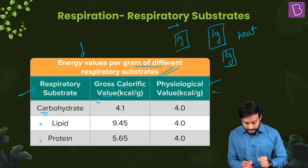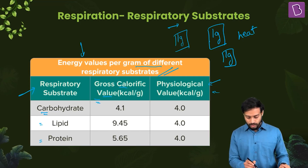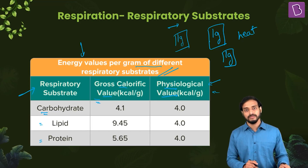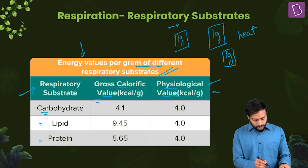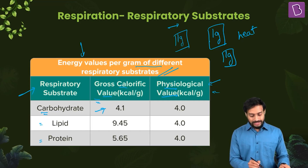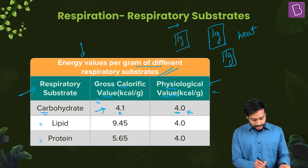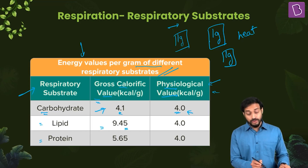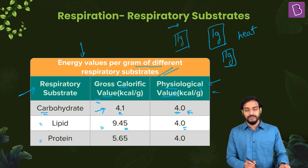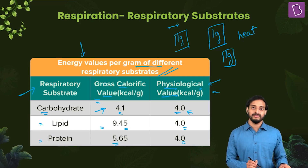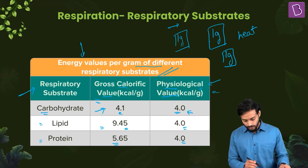For carbohydrates, the physiological value is 4.1 kilocalories per gram. For lipids, the gross calorific value is 9.45 kilocalories per gram and the physiological value is 9.0. For proteins, the gross calorific value is 5.65 kilocalories per gram and the physiological value is 4.0 kilocalories per gram.